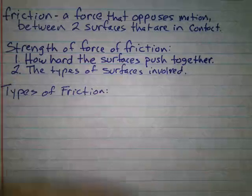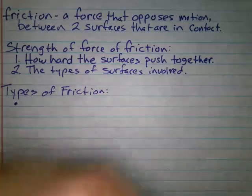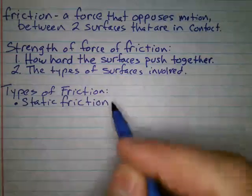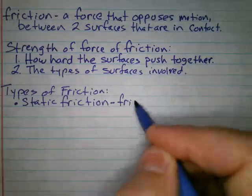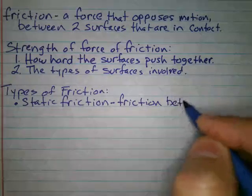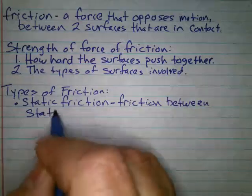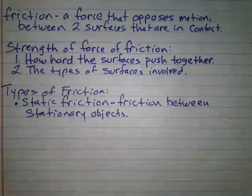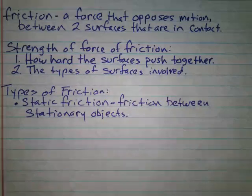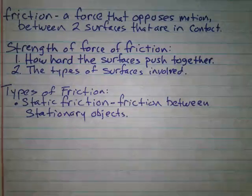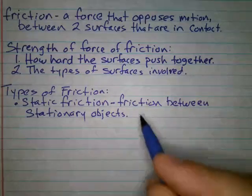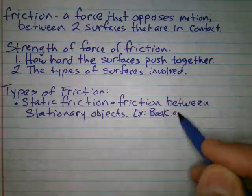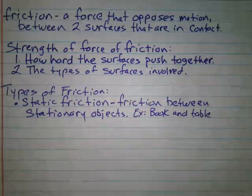First kind: static friction. This is why we can walk. Static friction is friction between stationary objects. When you're standing up, just standing still, there's friction between the bottom of your shoe and the floor. That's static friction. And when you try to push off to take a step, it is static friction that keeps you from sliding all over the place. An example would be between a book and a table.